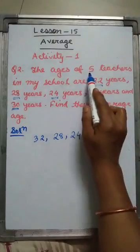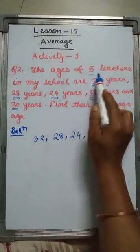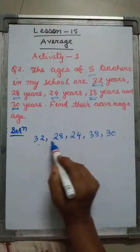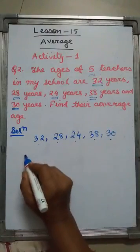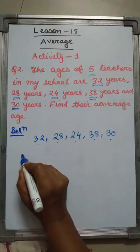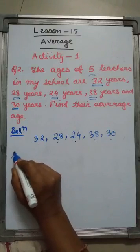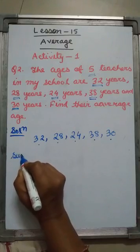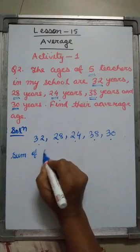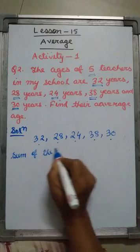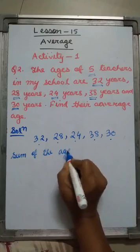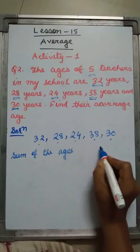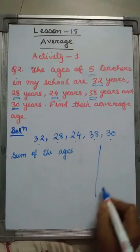How many teachers? 5 teachers — 1, 2, 3, 4, 5. So first you find the sum of the values. Sum of the ages: what is it?